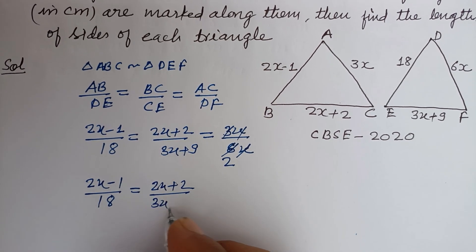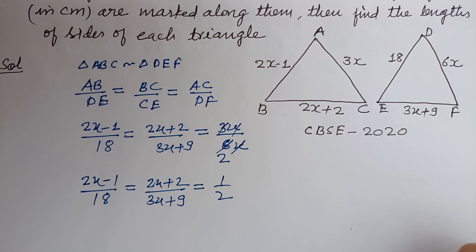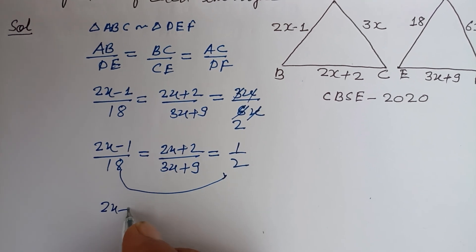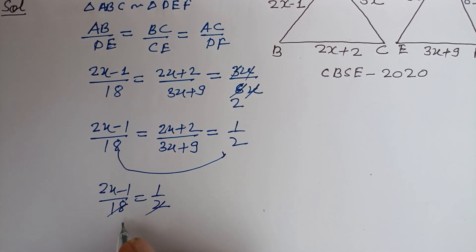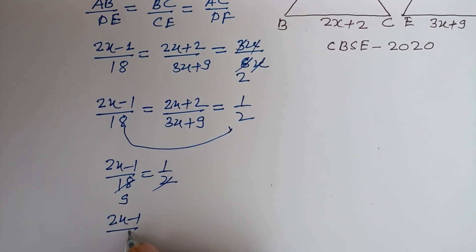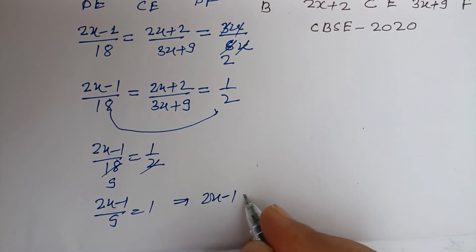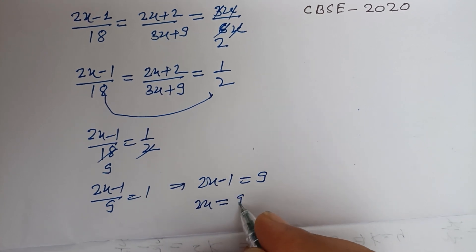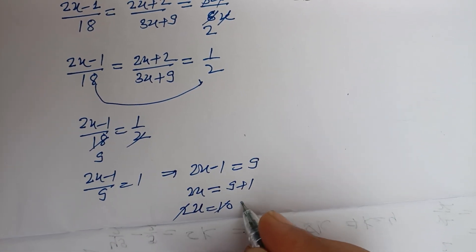Putting these parts equal, so 2x minus 1 upon 18 equals 1 by 2. Two goes into 18 nine times, so 2x minus 1 upon 9 equals 1. From here, 2x minus 1 equals 9. Therefore 2x equals 9 plus 1, and 2x equals 10.